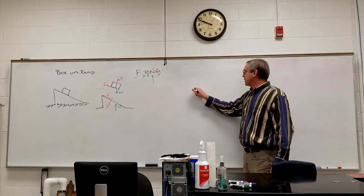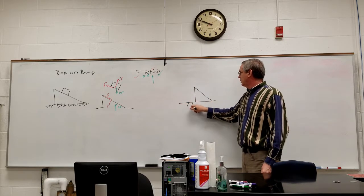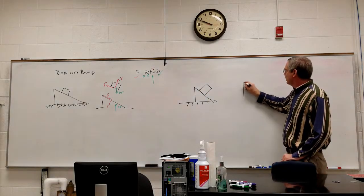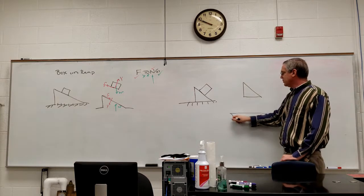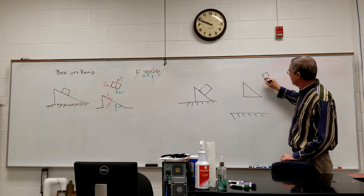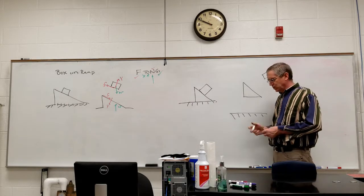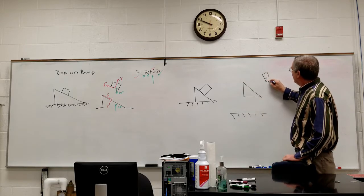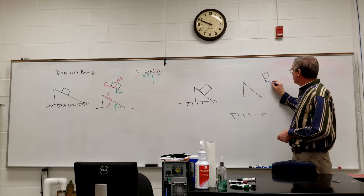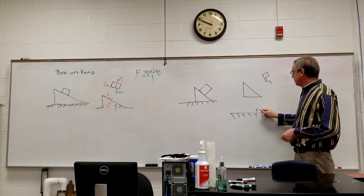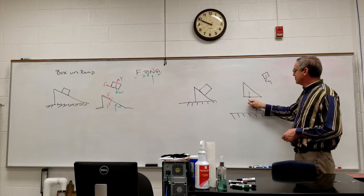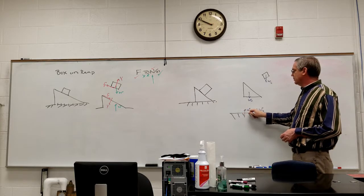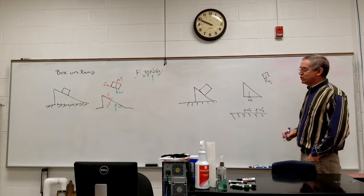If I separated the box and ramp from the ground, we still have box on ramp, except now we have a third object. As before, we have weight acting down. I now have two small objects, so it needs subscripts. W sub B for the weight of the box, and W sub B on the box diagram. I have the weight on the ramp acting down — W sub R, W sub R. Gravitational force is taken care of.